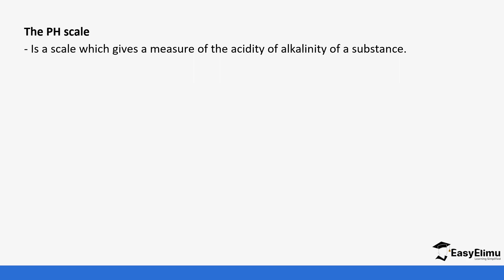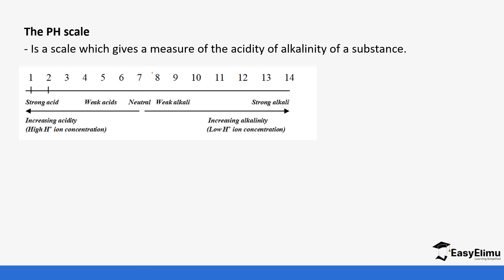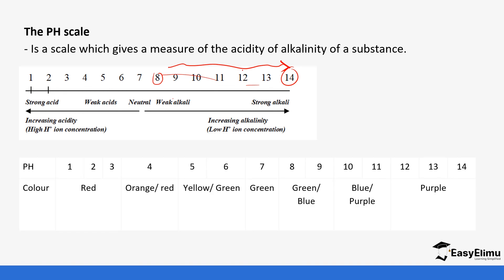The pH scale tells us the acidity or alkalinity of a solution — the same way it was used with acids to tell whether an acid is strong or weak. For alkaline solutions, strength increases with increase in pH. From pH 8 to pH 14, this range represents alkalis — the bigger the pH, the stronger the alkali. As the pH increases, there are more hydroxide ions in solution and fewer hydrogen ions.